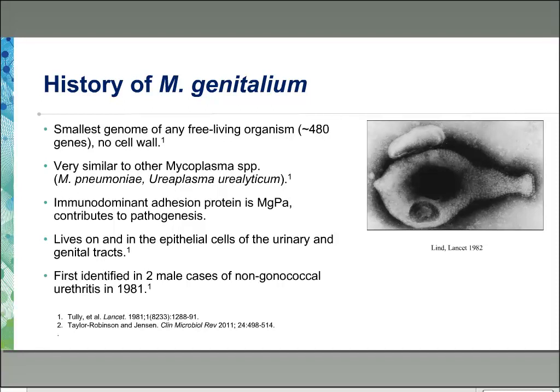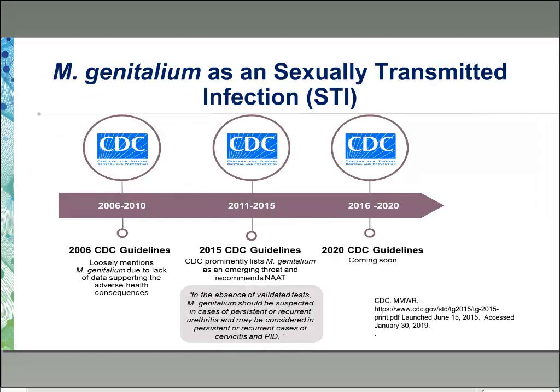MGen has also been identified among MSM with respect to asymptomatic rectal carriage. It was originally identified over 30 years ago — back in the 1980s, first identified in two male cases of NGU. Despite its early association with NGU, only recently has MGEN gained attention as an emerging sexually transmitted infection.